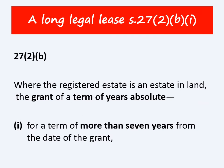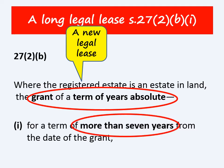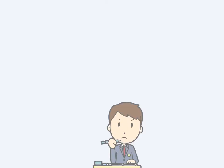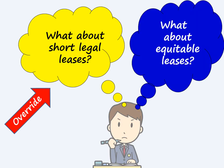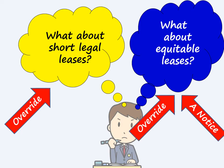The first is the grant of a long legal lease. The duration of the lease has to be for a term of more than seven years from the date of grant. When a new legal lease of more than seven years is granted, it is registered at the land registry and given its own unique title number. A note will also be put in the charges register of the registered freehold estate from which the lease has been granted. Short legal leases are protected because they override registrable dispositions, and owners of equitable leases may protect their interest by entering a notice in the charges register, or the lease may override if the tenant is in occupation.